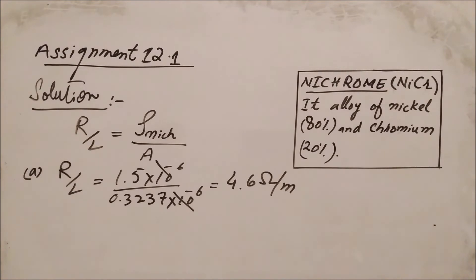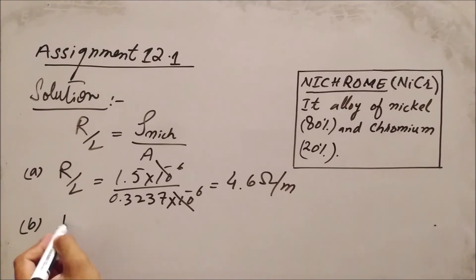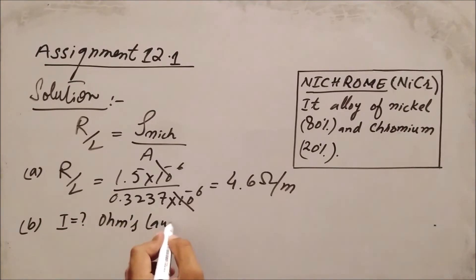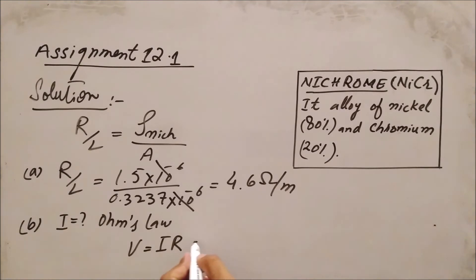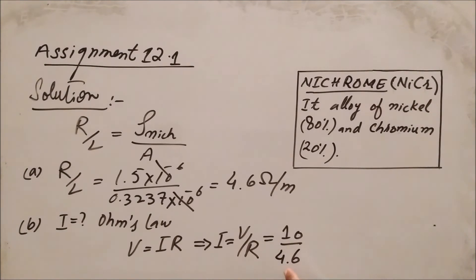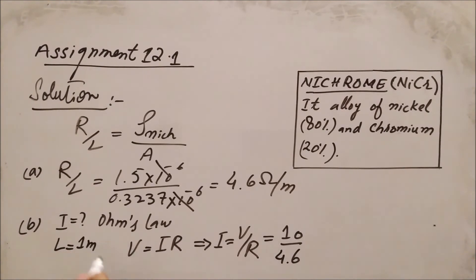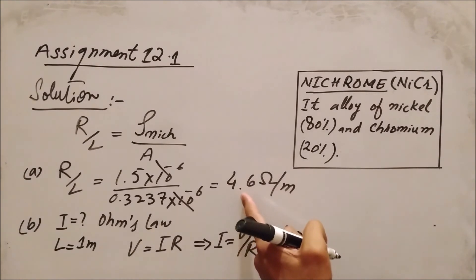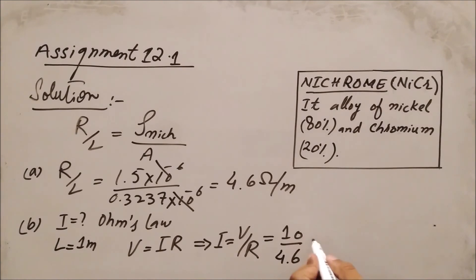Moving to the second section, we have the value of voltage and are asked to find the current. Using Ohm's law, V equals IR, so I equals V divided by R. Putting in the values: V is 10 volts, and the resistance is 4.6 ohms. They have already given us the length as 1 meter, so resistance is 4.6 divided by 1, which is 4.6. Therefore, the required answer is 2.2 amperes.